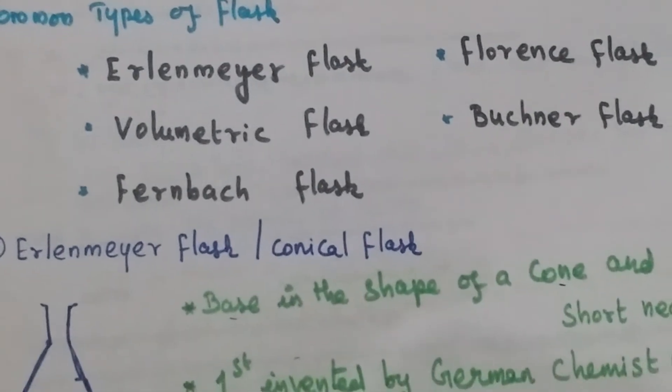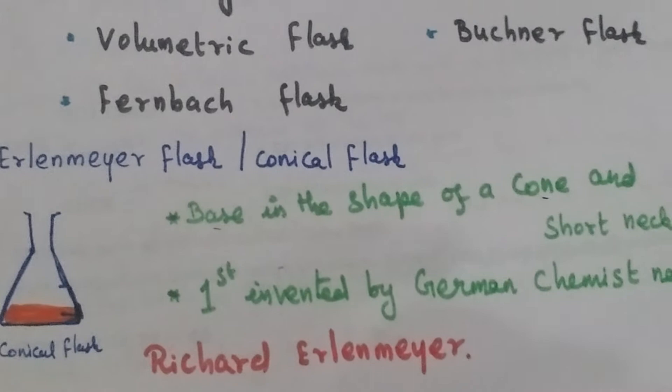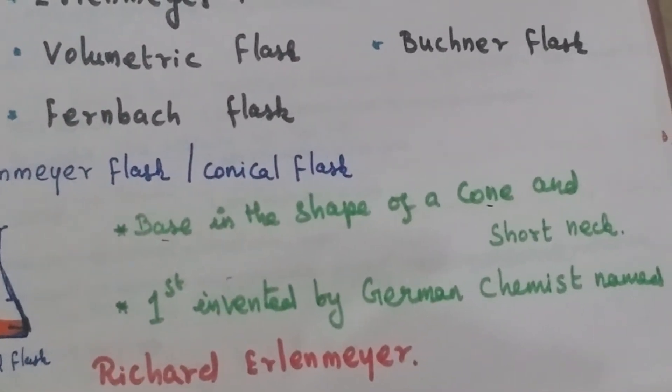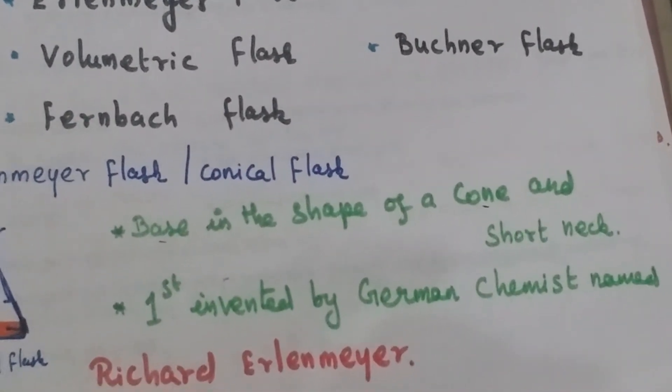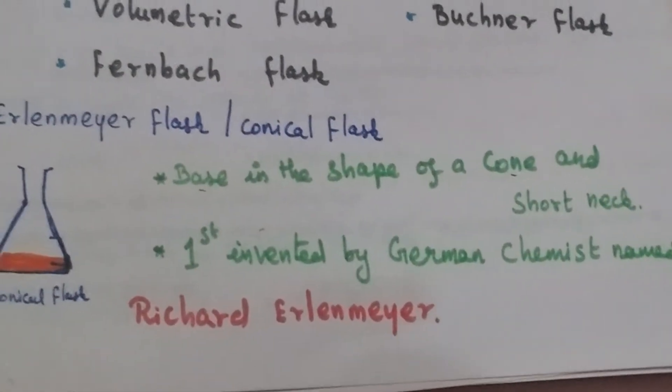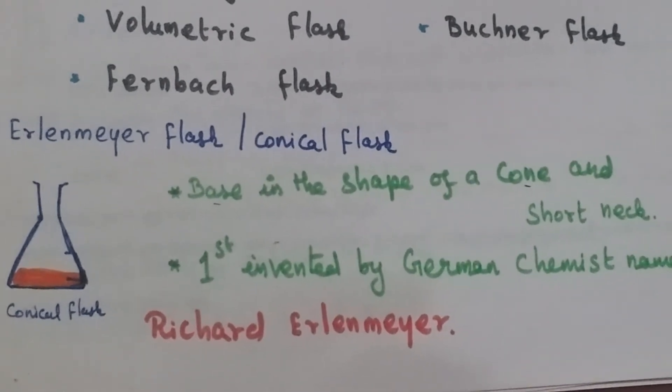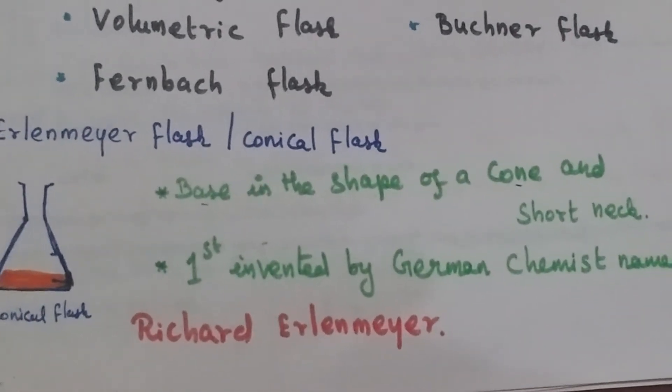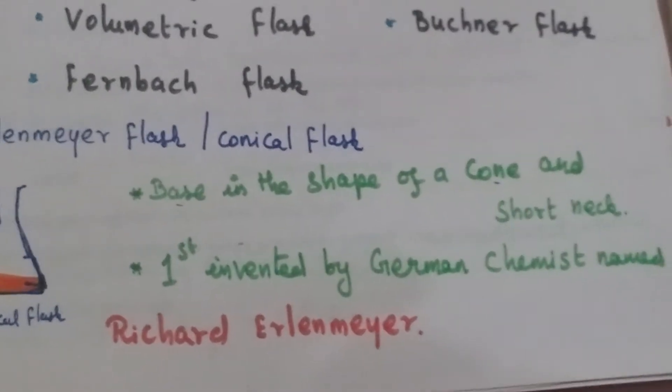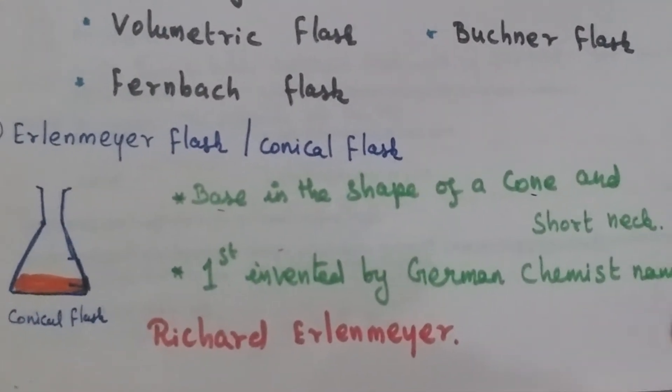First is the Erlenmeyer flask, also called a conical flask. It has a cone-shaped bottom and a short neck. This flask was first invented by German chemist Richard Erlenmeyer, which is how the flask got its name.